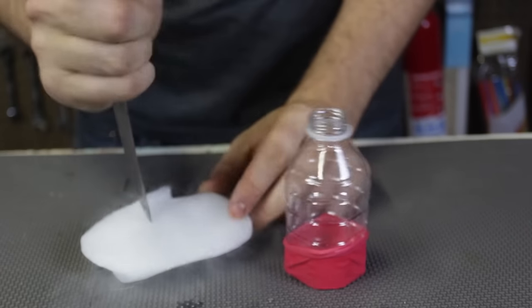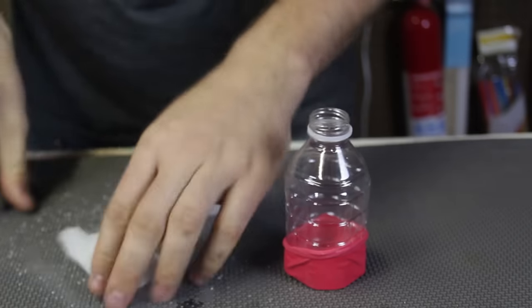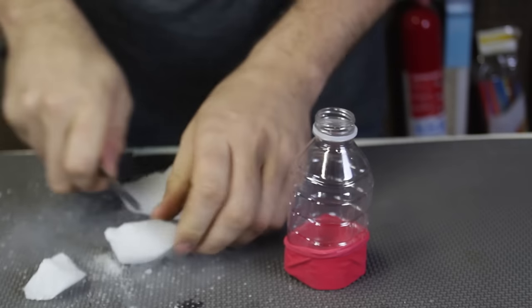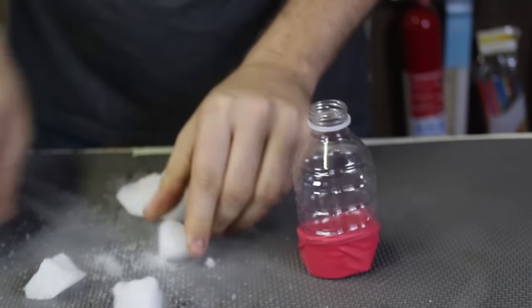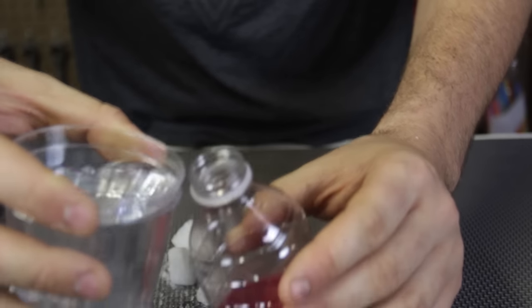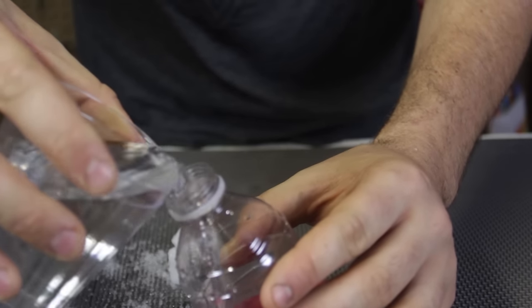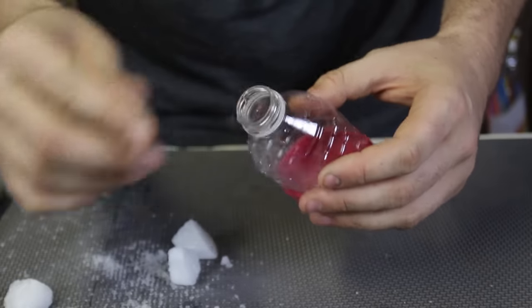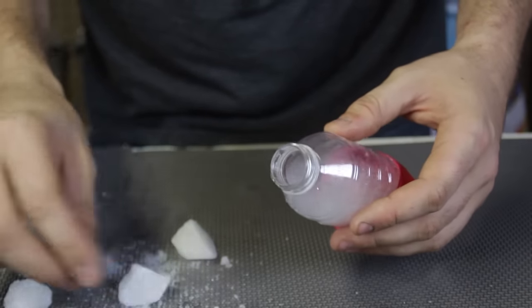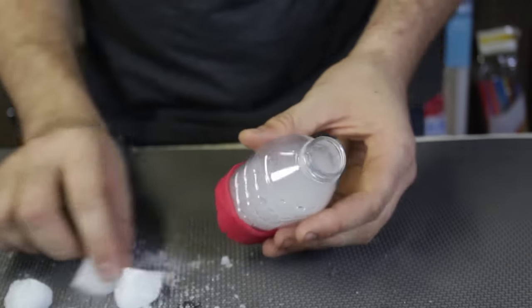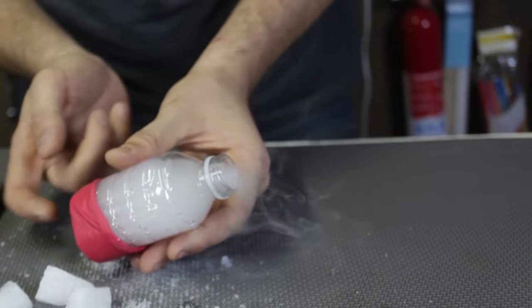Then we're going to get a little bit of dry ice, couple small slices. Then I'm going to pour water inside of this bottle, just a little bit. And then I need one or two small pieces of dry ice. And now look what happens.